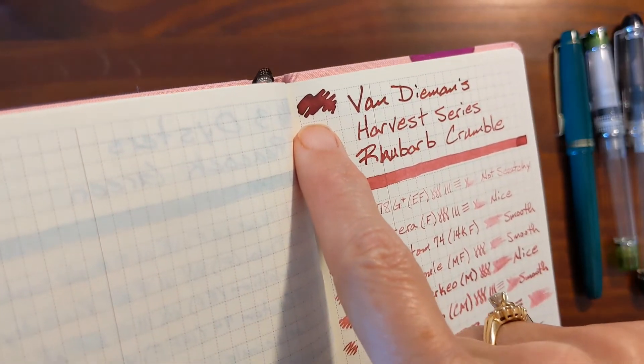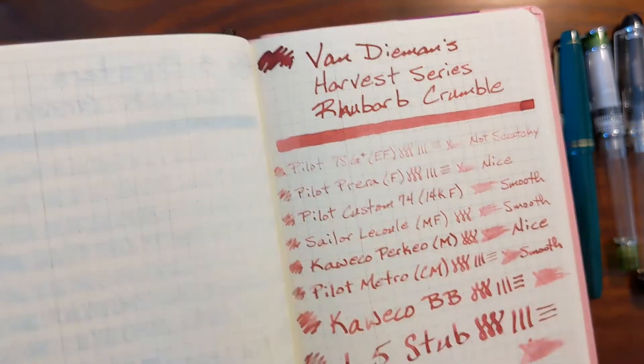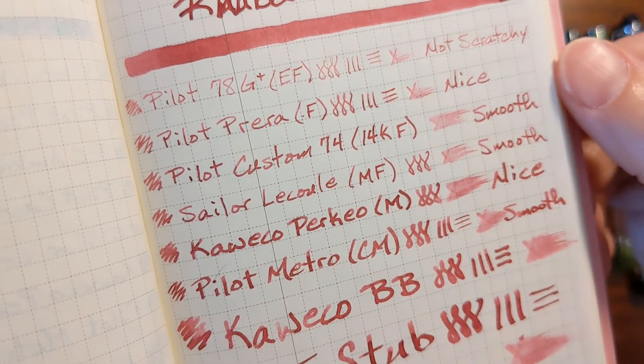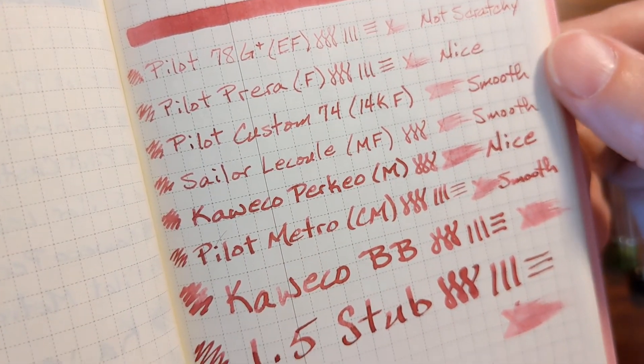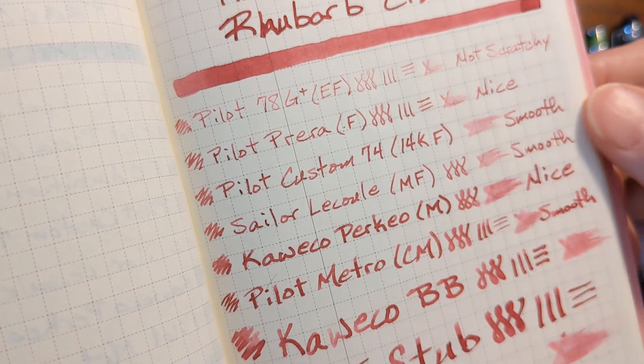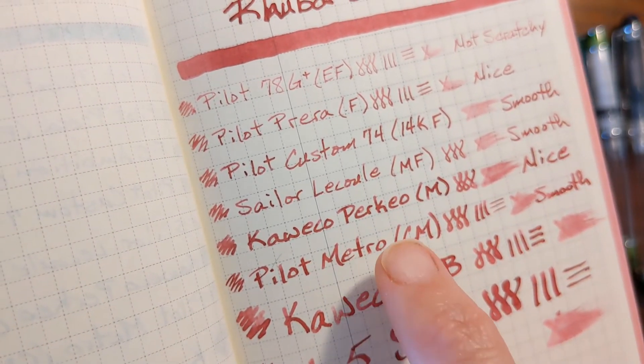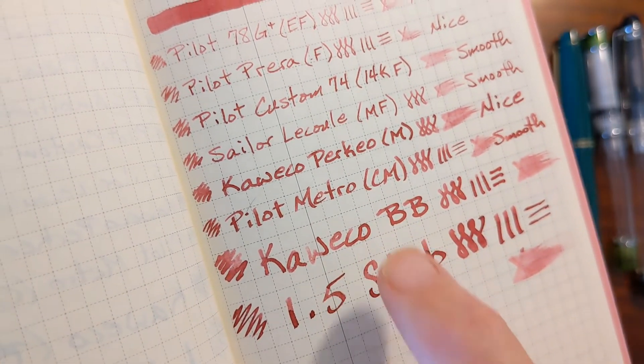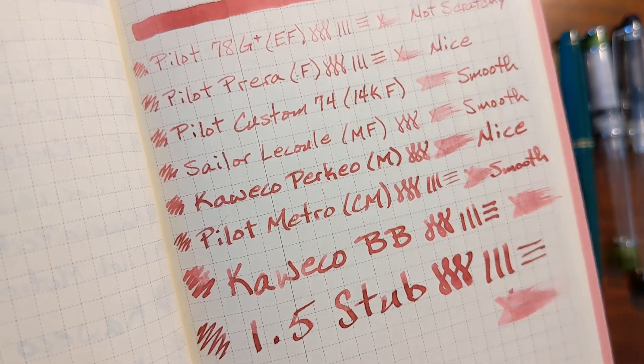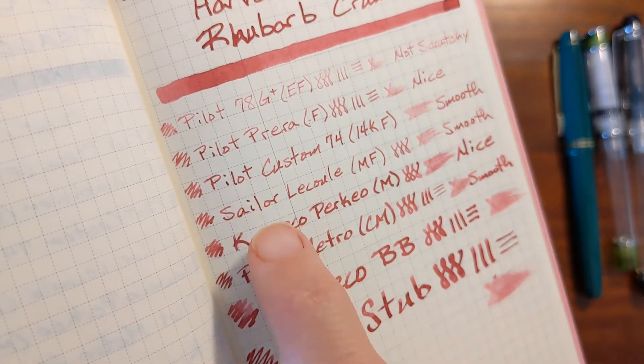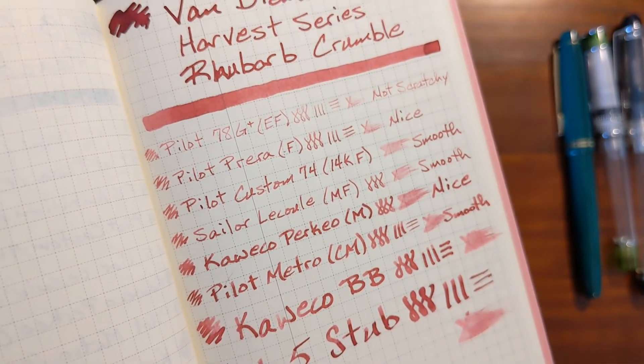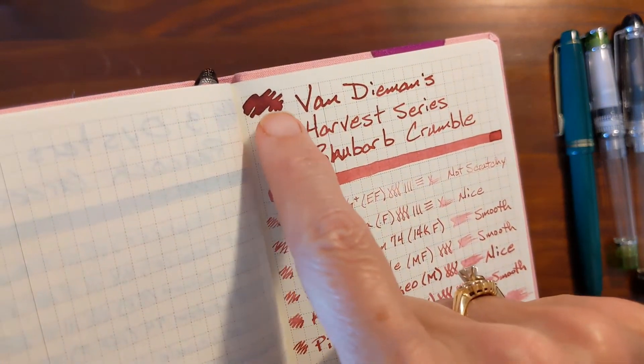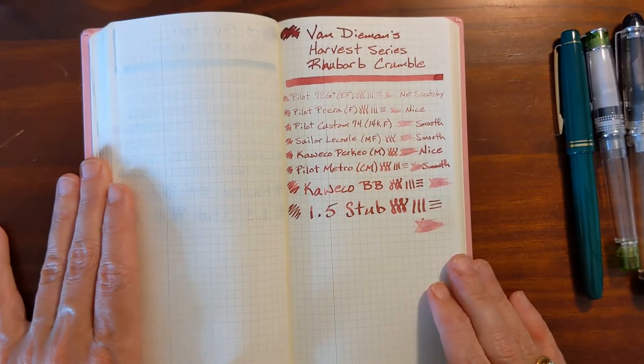I'm not seeing any sheen, but when the ink is laid down really heavily, you get some haloing in the finer nibs. I'm not seeing much shading. There is a little. But in the Perkeo and the Metro and the broader nibs, the shading shows up a little more. This is a nice ink, especially in the wetter writing fine nibs. It's a nice pink, and that halo gives the writing a little more interest.